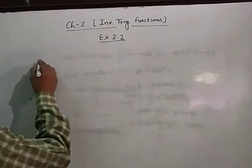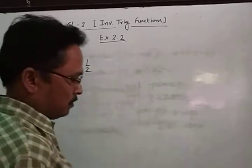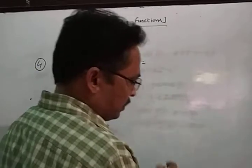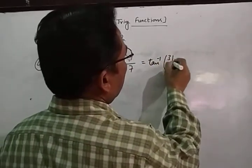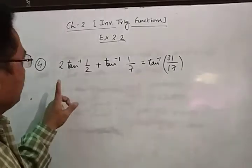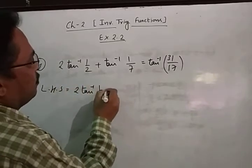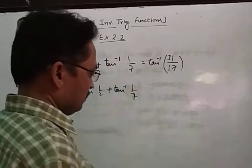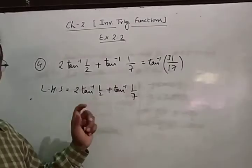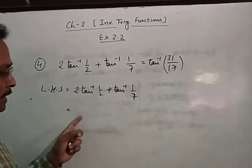Question 4: prove that 2tan⁻¹(1/2) + tan⁻¹(1/7) = tan⁻¹(31/17). The LHS is 2tan⁻¹(1/2) + tan⁻¹(1/7). In the last class, I showed that 2tan⁻¹x = tan⁻¹(2x/(1−x²)). So first of all, we have to apply this property.